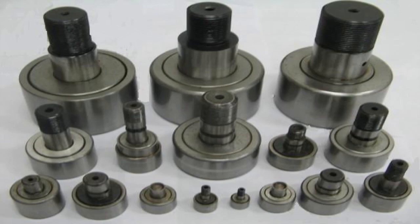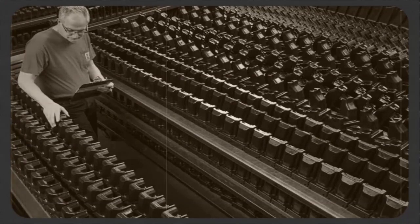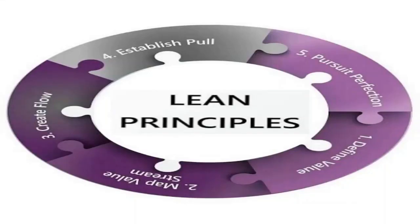Traditionally, manufacturing teams love high volume production, as there is no need to do any changeovers and the production will happen without disturbance. But the lean principle of pull does not allow this to happen. The pull principle requires you to produce only when there is a need.